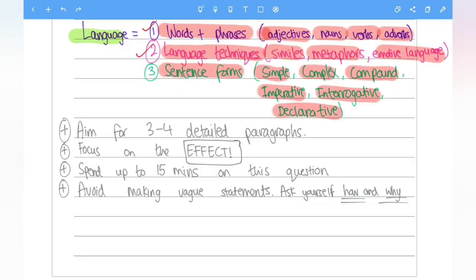And finally, just some top tips for you for question three for English language paper two. Aim for three to four detailed paragraphs. As mentioned before, focus on the effect.